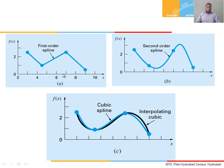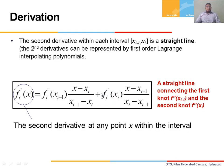If we connect them so that they are continuous as well as differentially continuous, we call them a second-order spline. And if we connect them such that they are continuous, their first derivative is continuous, and their second derivative is also continuous — that is, continuity is maintained, slopes are equal, and curvatures are also equal — that is called a cubic spline.